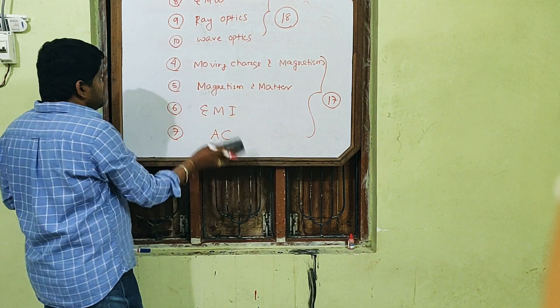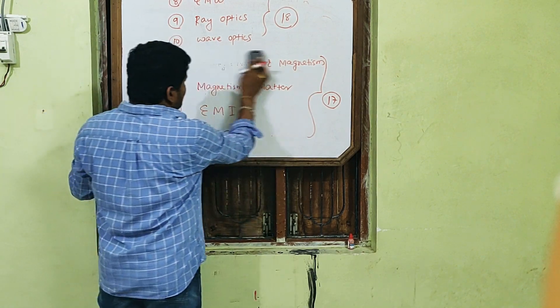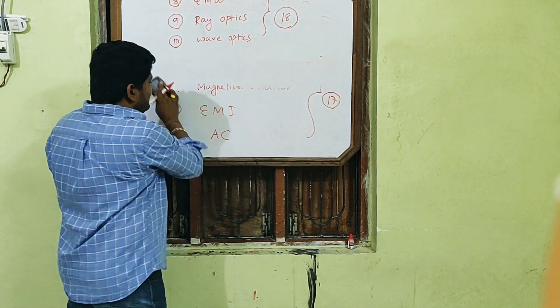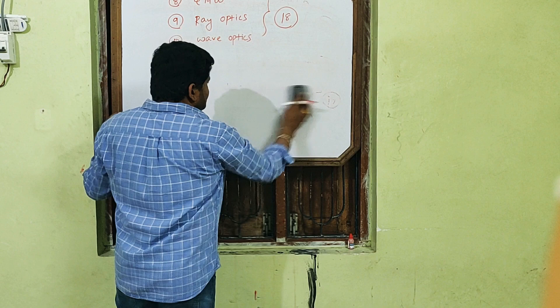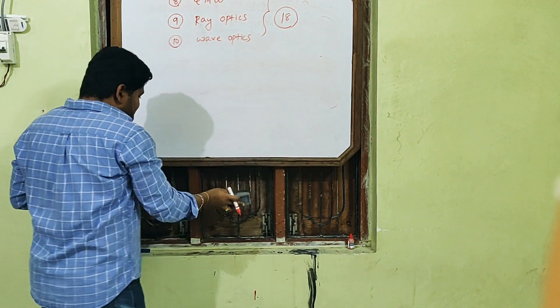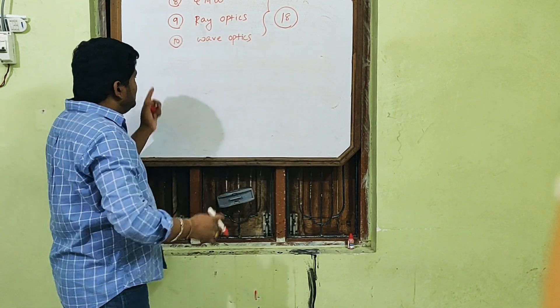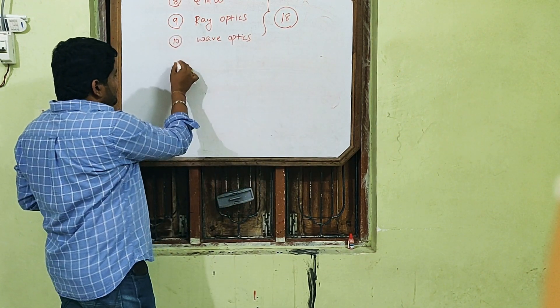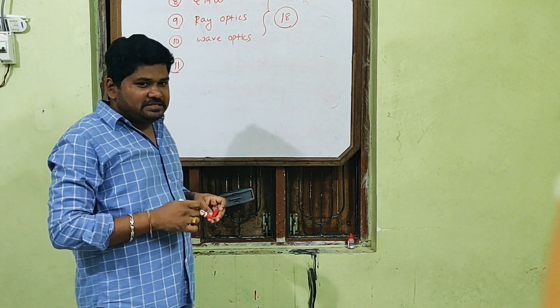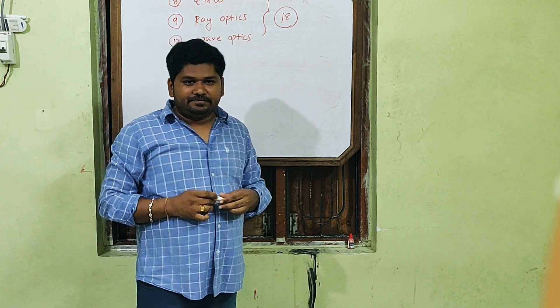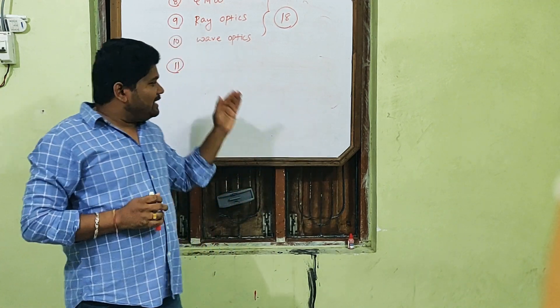From Chapter 11 onwards, Modern Physics starts. These topics are a little easier and more mark-fetching. Chapter 11 will discuss Dual Nature — the dual nature of matter and radiation.